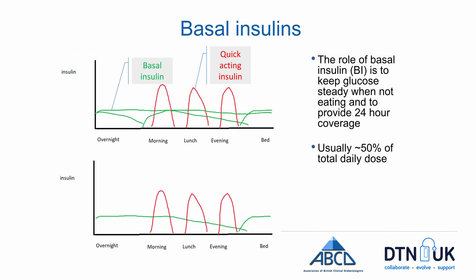The aim of basal insulin is to provide 24-hour coverage and keep glucose levels steady when you're not eating. Here you can see the basal insulin in green. The basal insulin should make up 50% of your total daily dose, and the other 50% is made up with your bolus insulin depicted here in red.